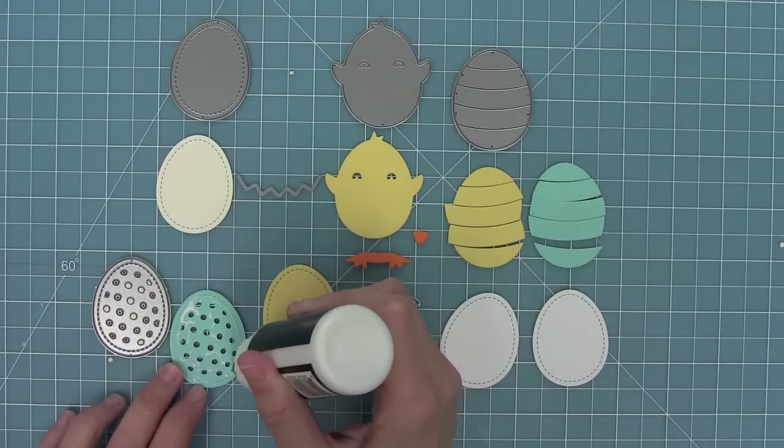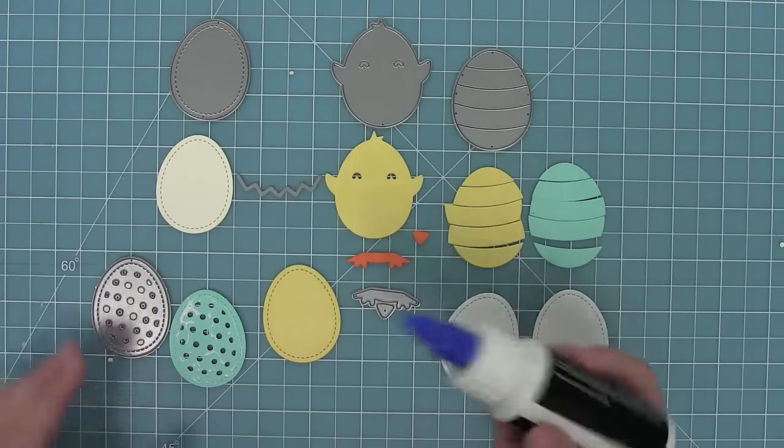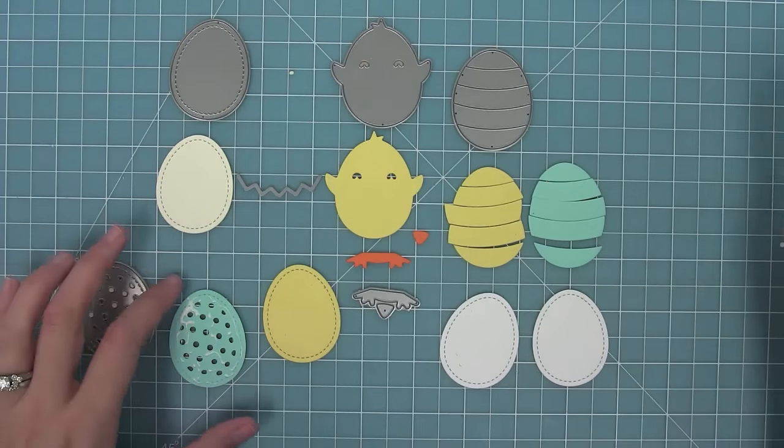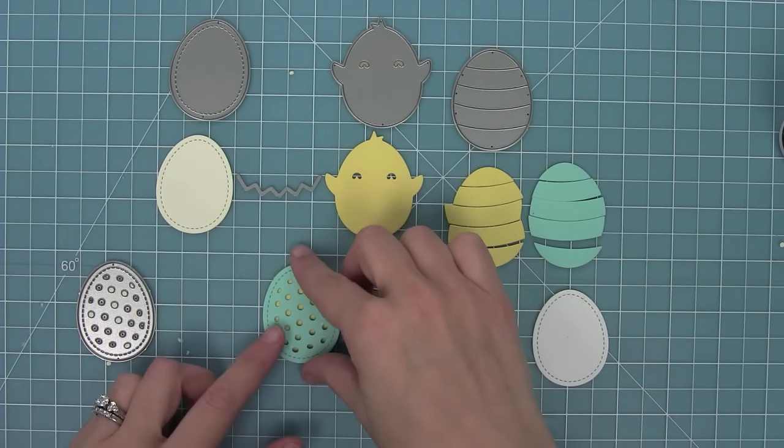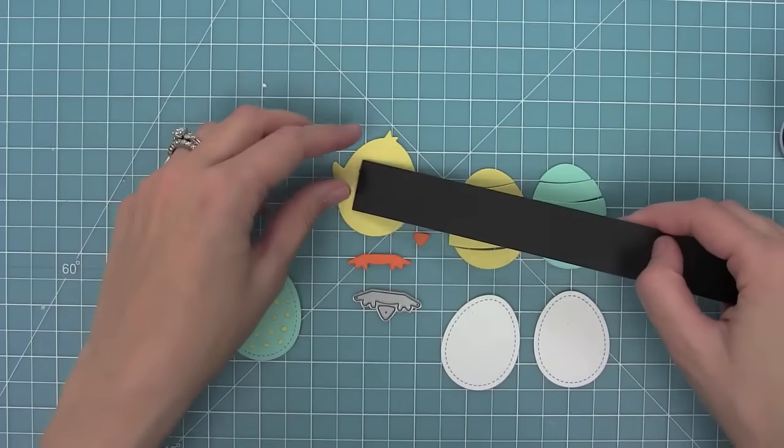I've cut the polka-dotted egg out of some blue and the base egg out of some yellow and I'm going to layer the two on top of each other. You can change the colors for any look that you would want and I just love when they layer on top and that beautiful stitching decoration.